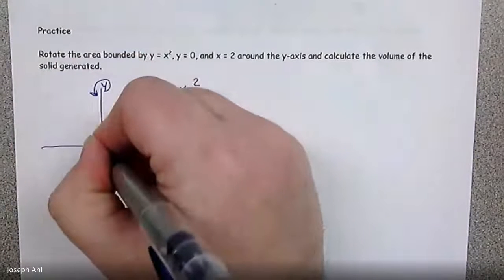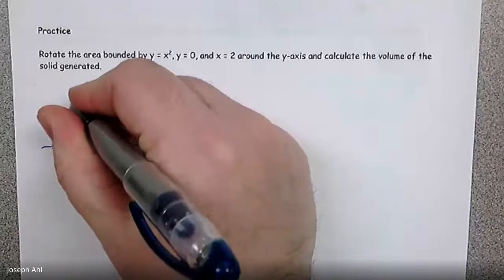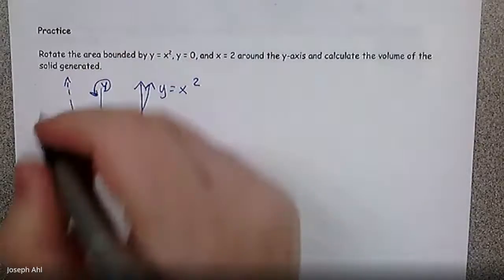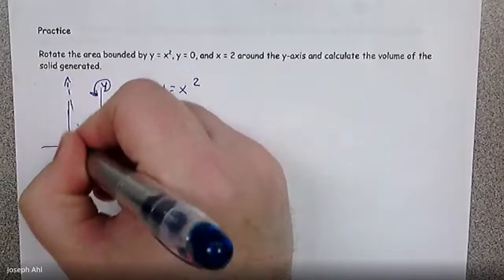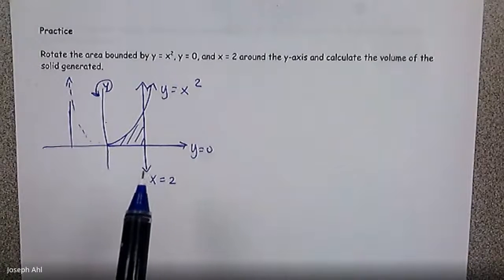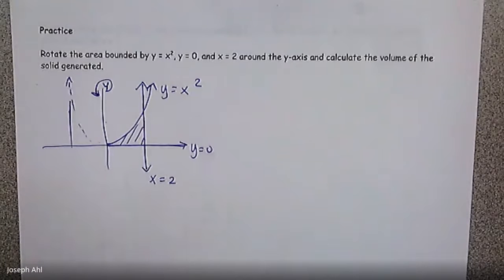Now, when I do that, if I kind of copy y equals x squared over here, and maybe this line at x equals negative two, there's really two different approaches you can take here.